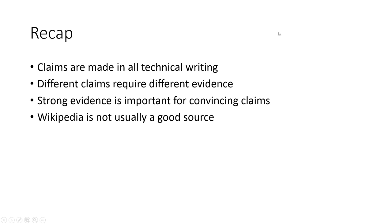To recap: claims are made in all technical writing, even if you don't believe you're making an opinion piece — you're trying to convince someone to buy a robot, use your software, or follow a particular procedure. Different claims require different evidence. Simple facts can be backed up with a single reference, but if a claim is more complex or potentially opinion-based, you'll need to build a very strong argument. Using strong evidence is very important for convincing claims — try not to use opinions or marketing data. Peer-reviewed or manufactured data is excellent. Wikipedia is usually not a good source, even though it might be accurate, and unless you're an expert, you shouldn't necessarily trust it.